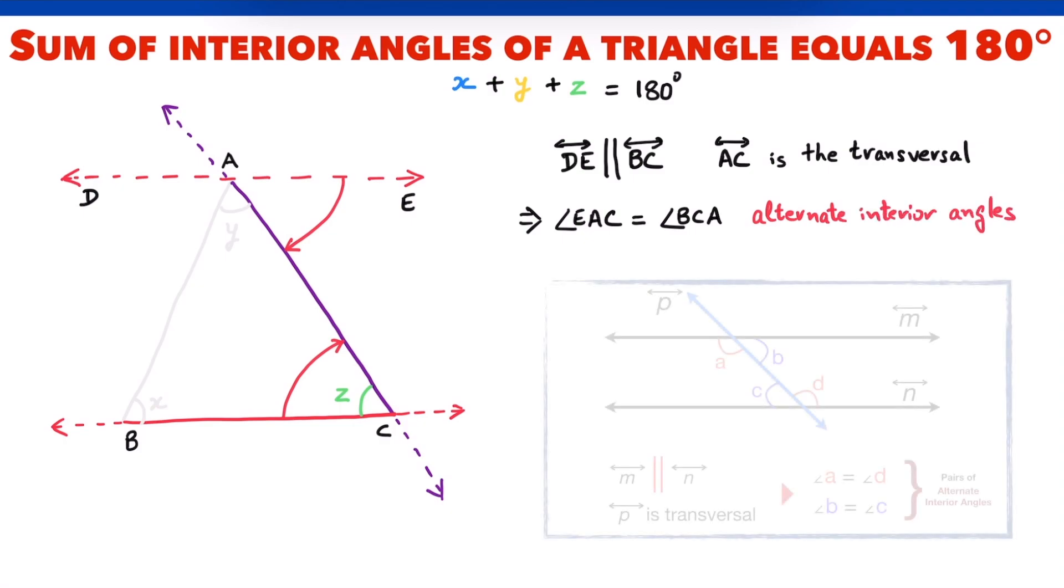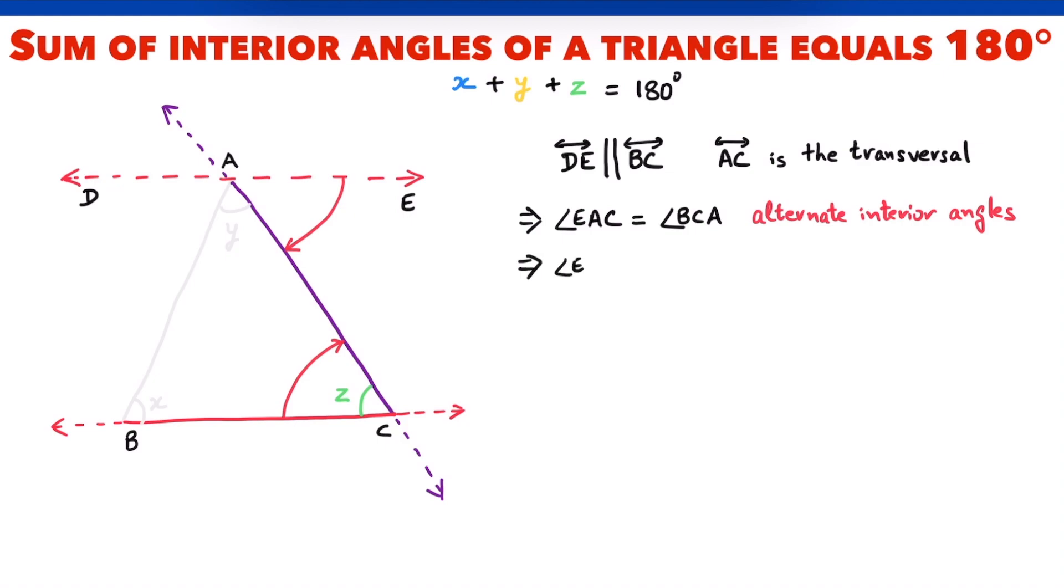For parallel lines intersected by a transversal, alternate interior angles are always equal. Angle EAC is equal to Z.